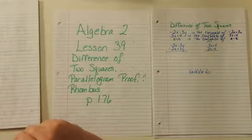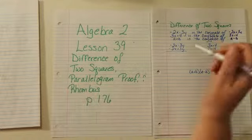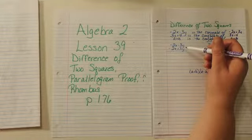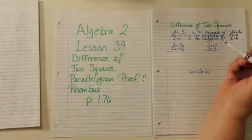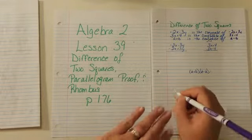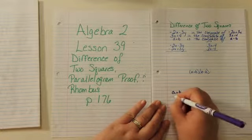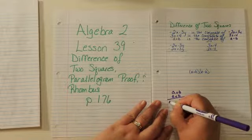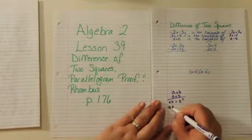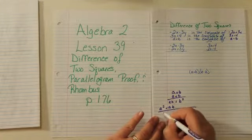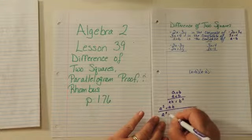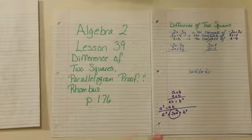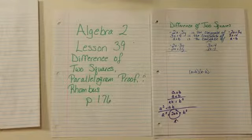When we multiply conjugate binomials, the product is not going to have a middle term. You remember when we multiplied a plus b times a plus b, we get b squared plus ab, and ab plus a squared. So we have a squared on one side and b squared on the other, with a middle term. When we multiply conjugates, we don't have the middle term.